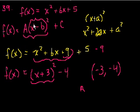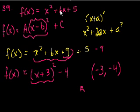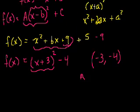You could have also done minus b over 2a: −6 over 2, which gives −3. That's something you could memorize, but it's better to have the intuition. The answer is choice A.